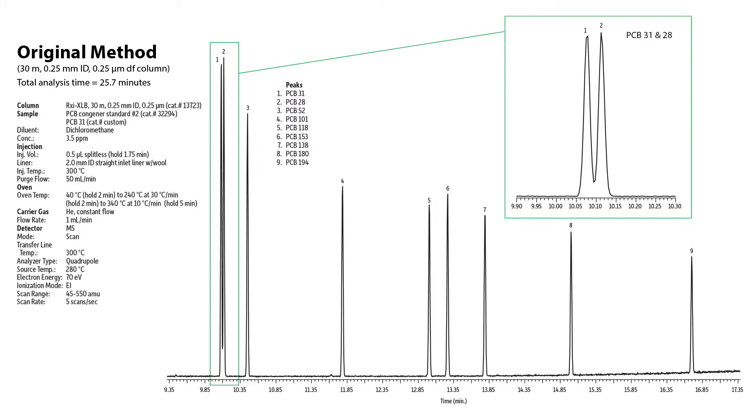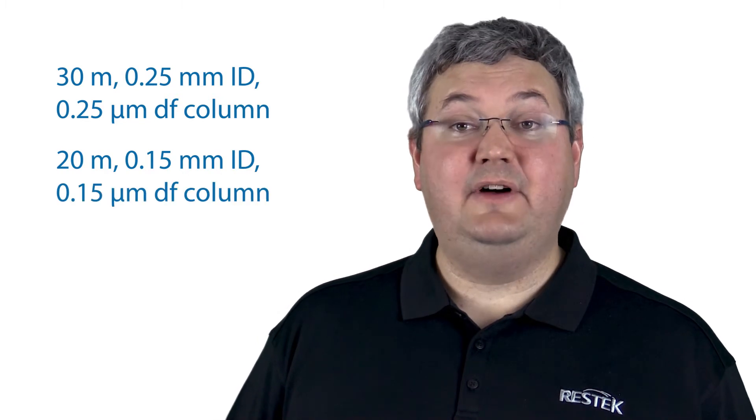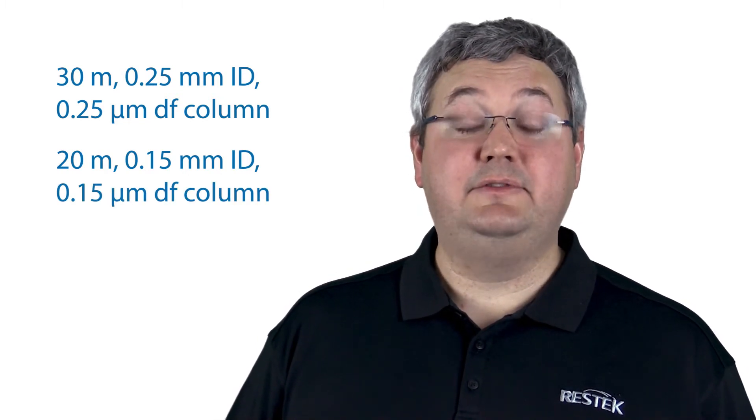Your first step is to select a scaled-down column with the same phase ratio and the same number of theoretical plates. In this example, we're switching from a 30 meter, 0.25 millimeter ID, 0.25 micron film thickness column to a commercially available 20 meter, 0.15 millimeter ID, 0.15 micron film thickness column, which has very nearly the same number of total plates.